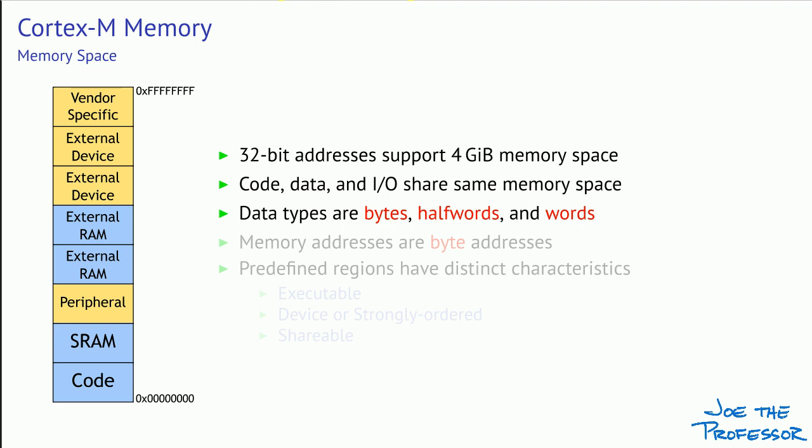The basic data types stored in memory can be bytes, half-words, and words — and that's really all the processor knows about. It doesn't know what that data means to you; it's up to you to keep track of that. Because the processor allows data values that are bytes, memory addresses are byte addresses. A particular memory address specifies a particular byte in memory. If the processor needs to access a half-word, it fetches the byte at the byte address and then the byte at the subsequent address. Likewise, to access a full word, the processor begins at the specified byte address and also accesses the next three byte addresses to get a full 32-bit word.